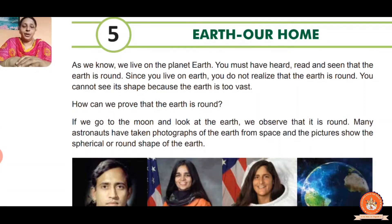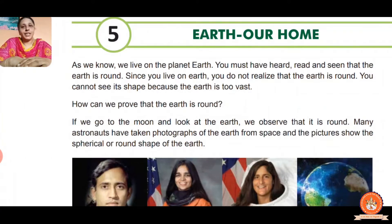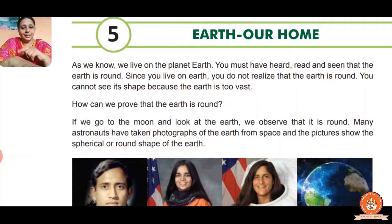So how can we prove that the Earth is round? A simple answer is there: the astronauts who went to the moon — those who go into space — have taken photographs of the Earth from space, which prove that the Earth is round.